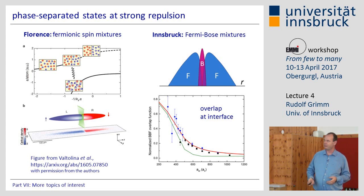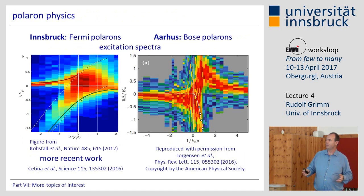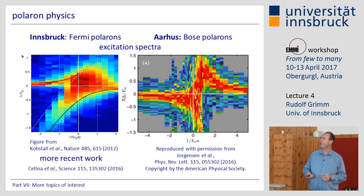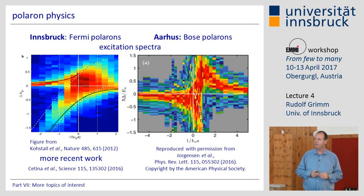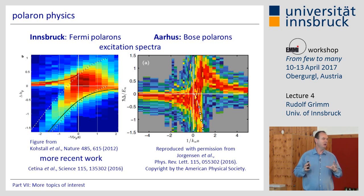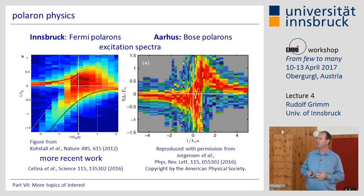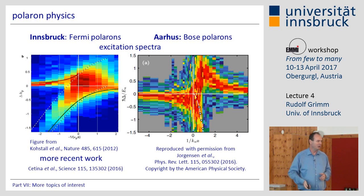This is Polaron physics — two examples: Innsbruck work on Fermi polarons and Aarhus work on Bose polarons, and we'll hear about both at this conference. In the limiting case, one single particle is immersed in a Fermi sea with very strong interaction, or in a Bose-Einstein condensate. There are some similarities but also very intriguing differences between these situations.